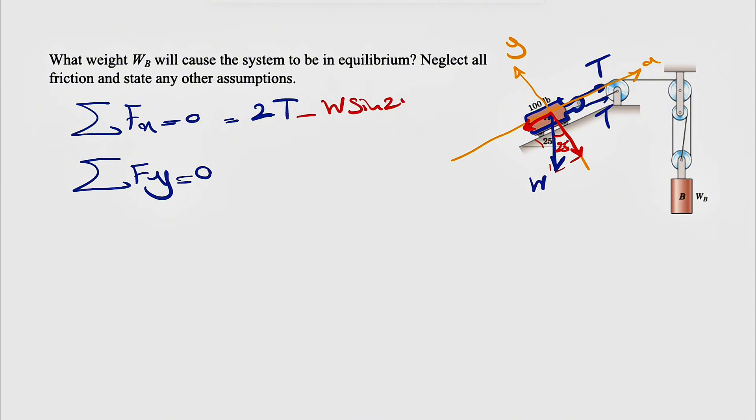So minus W sine of 25 degrees equals zero and we know also the W is 100 pounds so we should be able to find the T's. So here our tension in the cable would be weight sine of 25 degrees divided by 2.